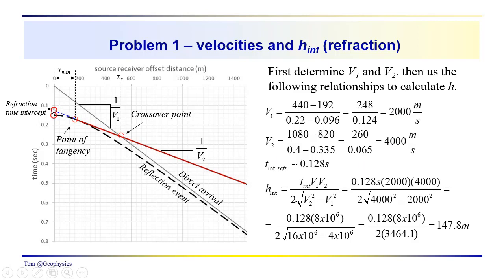Now, the intercept, if we're going to use the refraction time intercept approach, we have to go over here and read this number. That was estimated to be 0.128 seconds. And then we plug into the formula that we developed for the thickness of the layer based on the time intercept approach. So we have the intercept time times the product of the velocities over 2 times the square root of the difference of the squares of the velocity. If you went through the calculations, you would have come up with similar numbers, and I'm getting a value for h from the refraction time intercept approach of 147.8 meters.